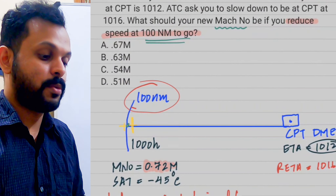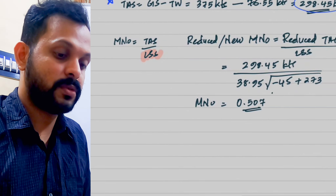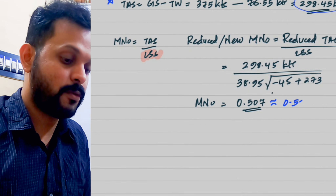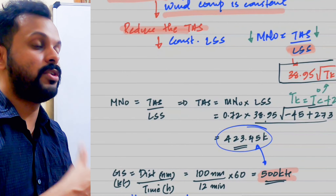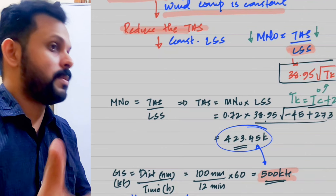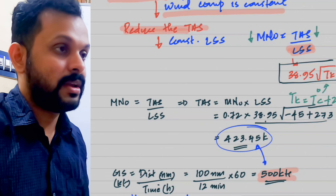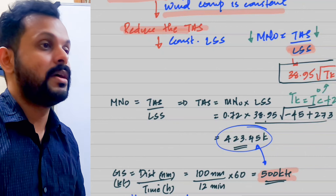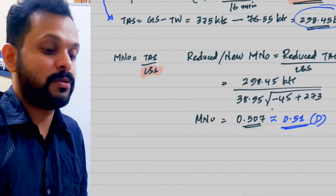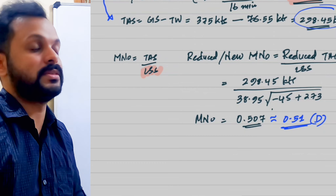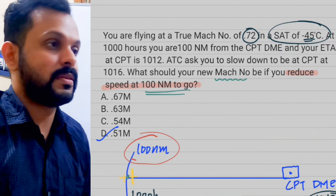Looking at the options, 0.67 and 0.60 are out of the question. It's close enough to 0.51, so we round 0.507 to 0.51 — hence option D is the answer. To summarize: to induce a time delay, reduce ground speed; for a given constant wind component, reduce true airspeed; with reduced TAS and constant local speed of sound, the Mach number reduces from 0.72 down to 0.51, meaning the TAS is now 51% of the local speed of sound.